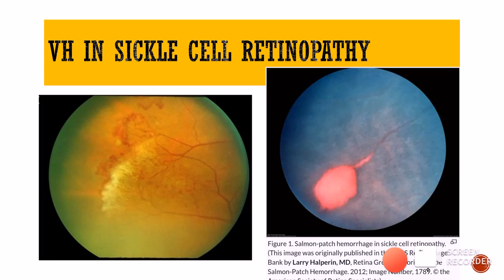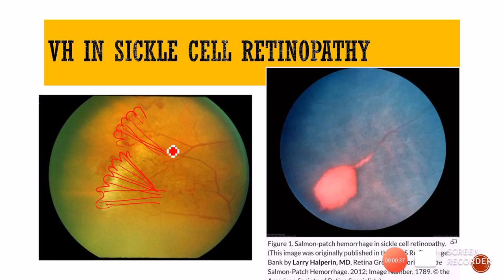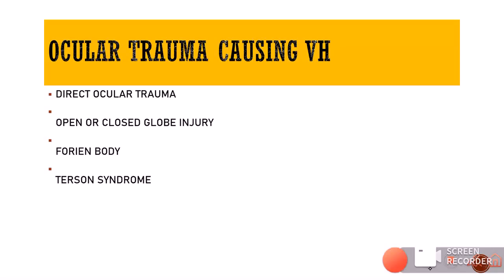Vitreous hemorrhage can also be seen in sickle cell retinopathy, an ocular manifestation of sickle cell disease in which abnormal hemoglobin leads to sickling of RBCs, causing ischemia in areas supplied by those blood vessels. A typical feature on fundus examination of sickle cell retinopathy is fan-shaped neovascularization. The type of hemorrhage specific to sickle cell retinopathy is described as a salmon patch hemorrhage, named for its salmon color.